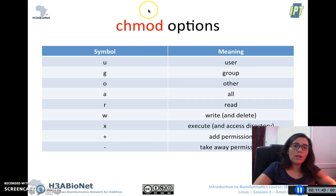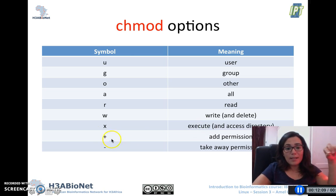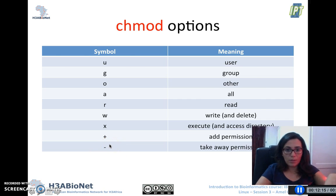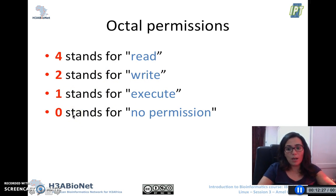The different options that can be used with `chmod` are: U for user, G for group, O for other, A for all, R for read, W for write, and X for execute. You can use the plus sign to add a permission and the minus sign to remove a permission. For the octal permissions: 4 stands for read, 2 stands for write, 1 stands for execute, and 0 stands for no permission at all on a given file or directory.